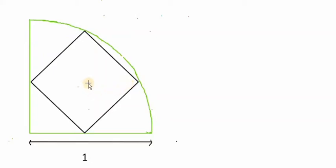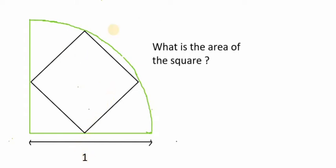In this question, a square is inscribed in a quarter circle, and this quarter circle has radius equal to one. What is the area of the square?